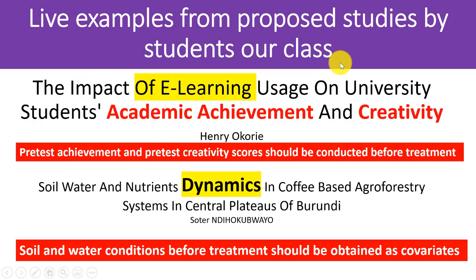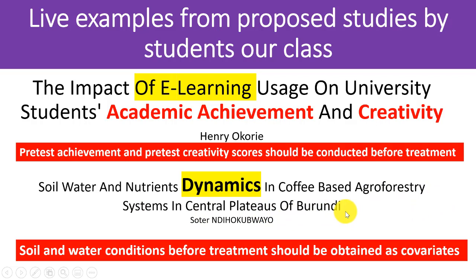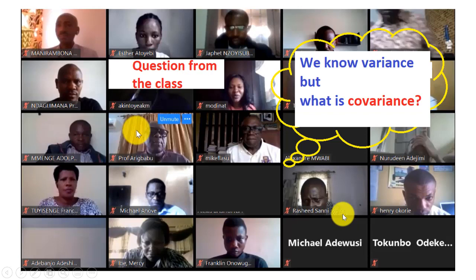Let's have examples from student studies in our class. Henry Ukuri wants to examine the impact of e-learning usage on university students' academic achievement and creativity. Ukuri must have pre-test achievement and pre-test creativity scores before conducting the e-learning treatment. For Sotel Ndihogwayo, who is looking at soil, water, and nutrient dynamics in coffee-based agroforestry systems in the central plateaus of Burundi, soil and water conditions must be determined before treatment — these serve as the covariates.